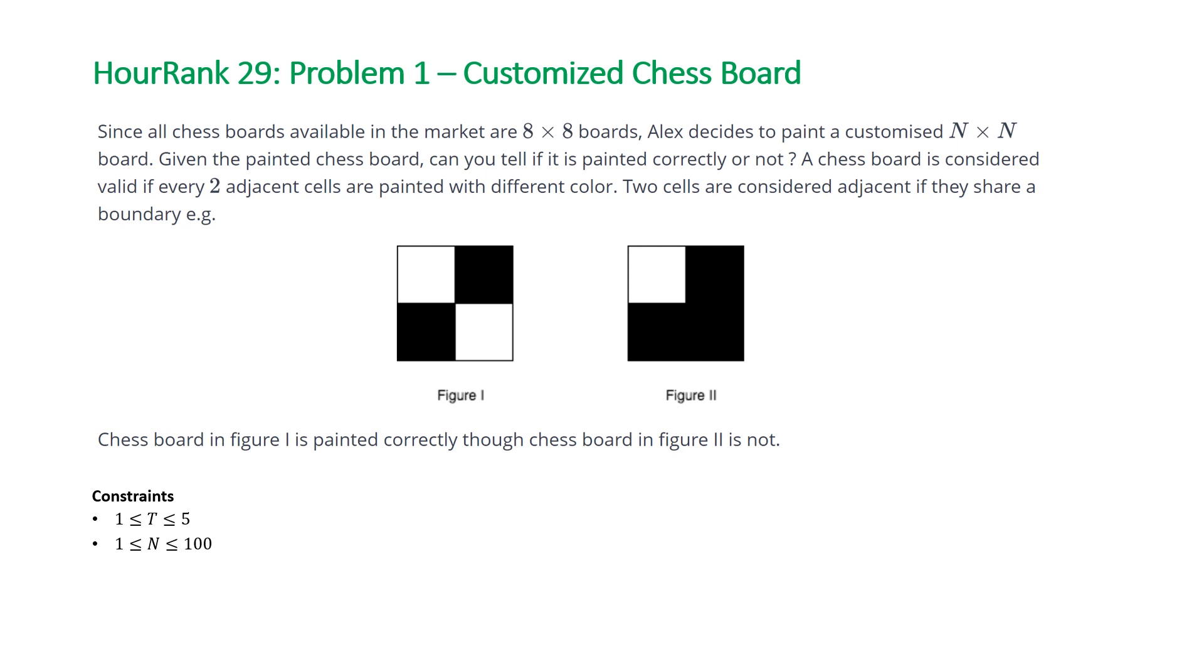The problem states, since all chessboards available in the market are 8x8 boards, Alex decides to paint a customized M×N board. Given the painted chessboard, can you tell if it is painted correctly or not? A chessboard is considered valid if every two adjacent cells are painted with different colors. Two cells are considered adjacent if they share a boundary.